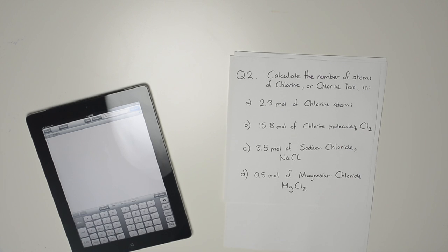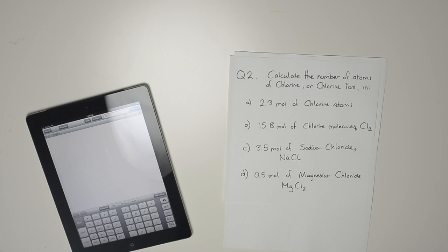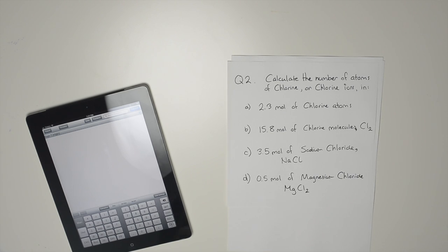From the textbook we have a bunch of questions. I'm going to start at question 2, from page 53. It says, calculate the number of atoms of chlorine or chlorine ions in part A: 2.3 moles of chlorine atoms.